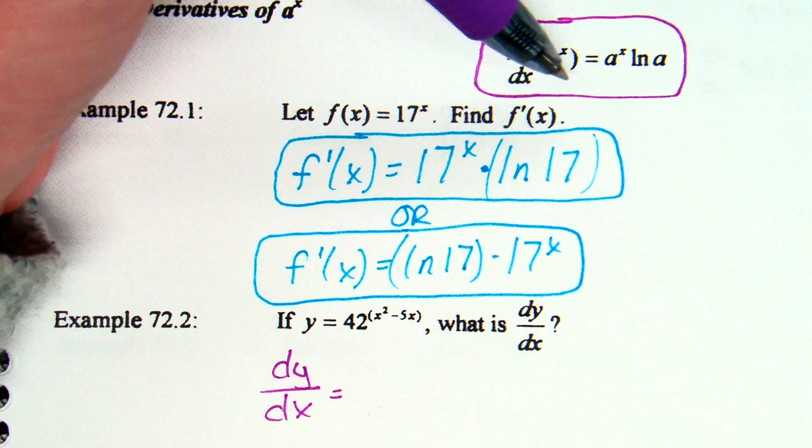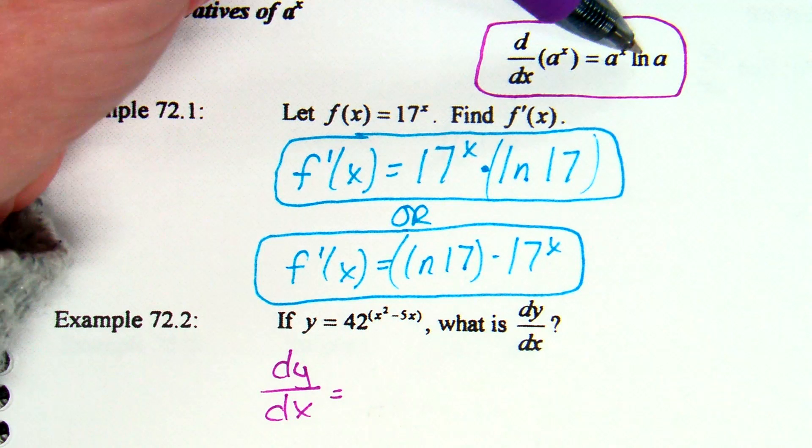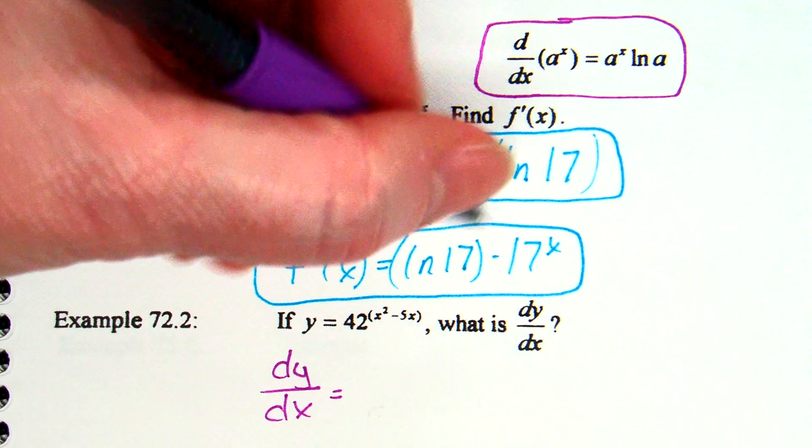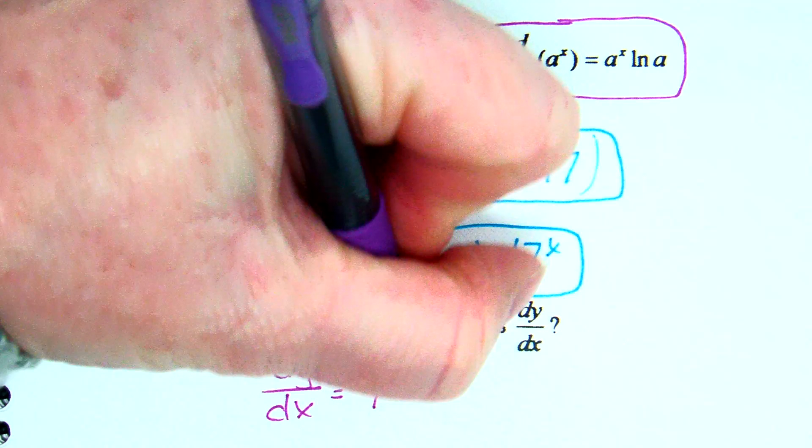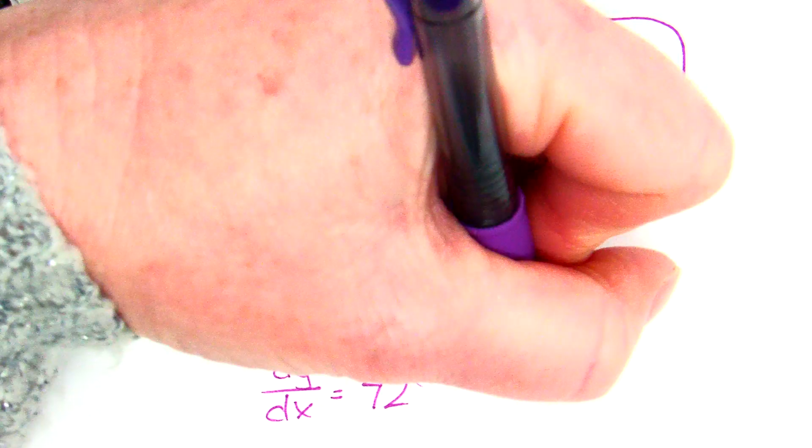I guess maybe I should have said the derivative of a to some power is a to some power times the natural log of a. So, this is the derivative of 42 to some power. So, it's still going to be 42 to some power. So, that x squared minus 5x times. Now, it's the natural log of a. So, in this case it's the natural log of 42.